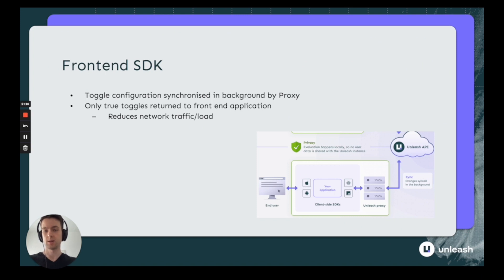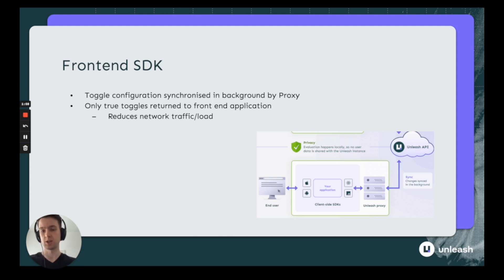The front-end SDKs interact directly with the proxy and the end user, and they only fetch the true feature toggles from the proxy. This means that network traffic and load is very small, which is important for people on mobile applications — you don't want to send them a huge amount of feature toggles all at once. It acts as a light wrapper that fetches from the proxy, while the proxy handles all of the evaluation and storing of the feature toggles.